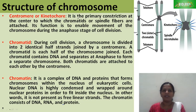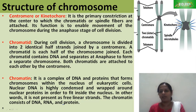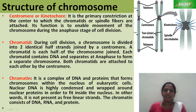Centromere is the primary constriction at the center to which the chromatids or spindle fibers are attached. Its function is to enable movement of the chromosome during the anaphase stage of cell division. At the centromere, two sister chromatids attach to each other, and at anaphase, spindle fibers attach to the centromere, allowing the chromatids to separate and move toward the poles.